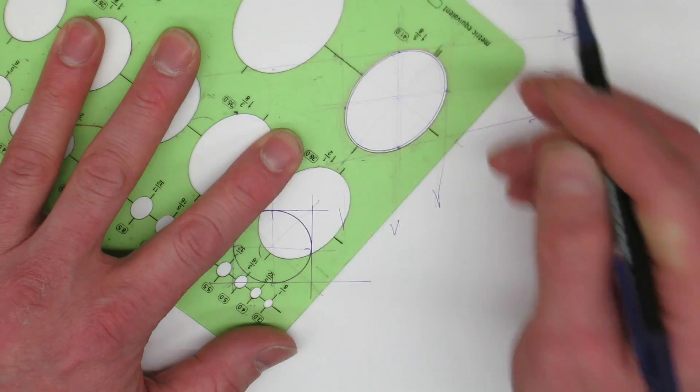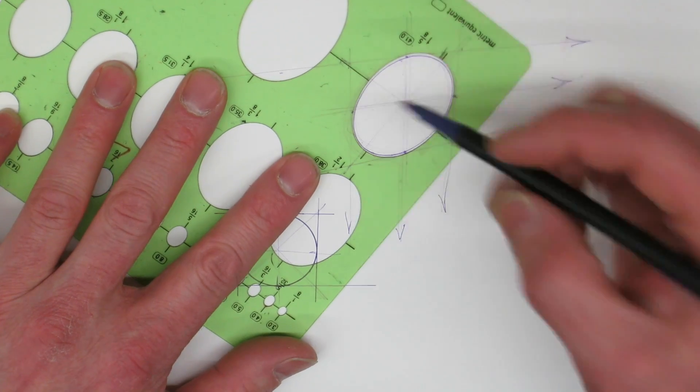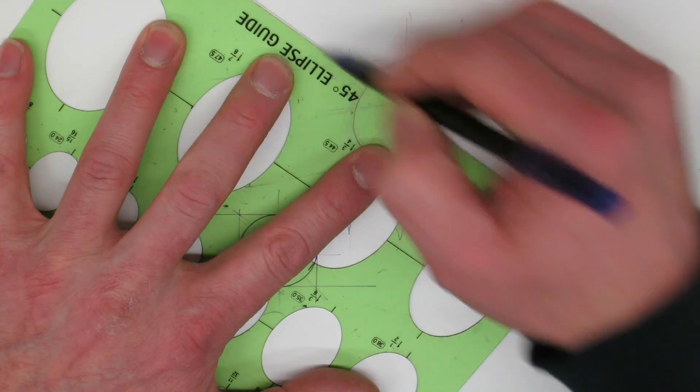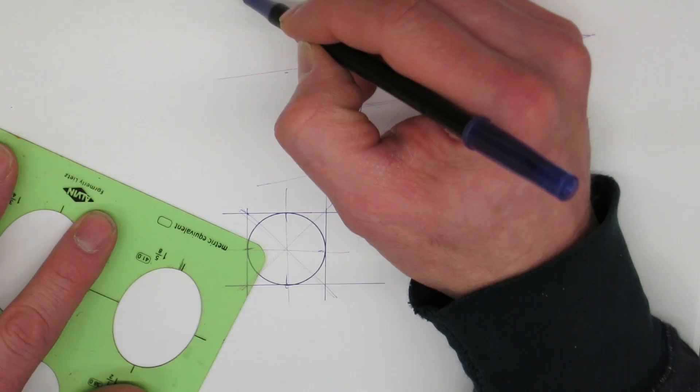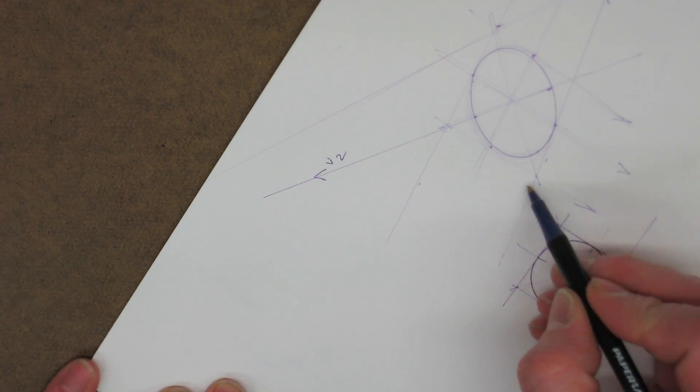so you can see that ellipse and I'm drawing in just marking in the short axis, basically that's pointing to the missing vanishing point in our sketch, so that would be the second vanishing point.